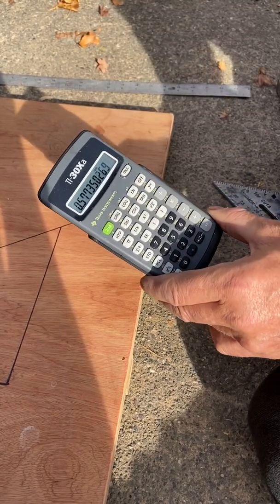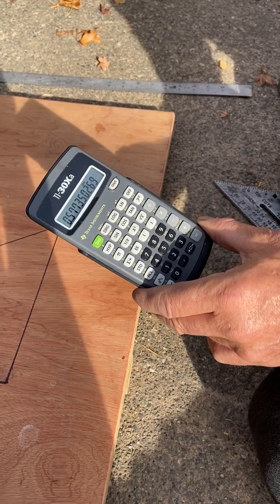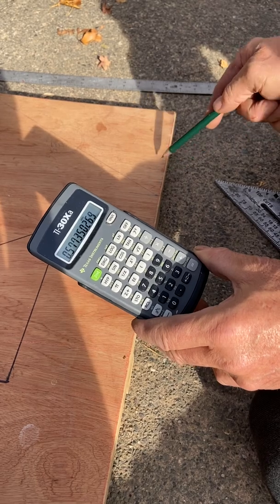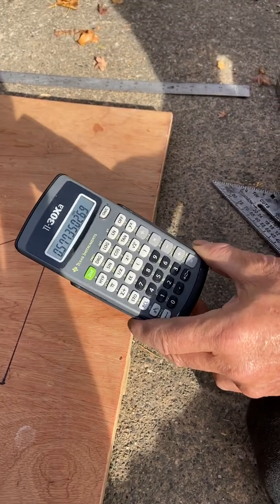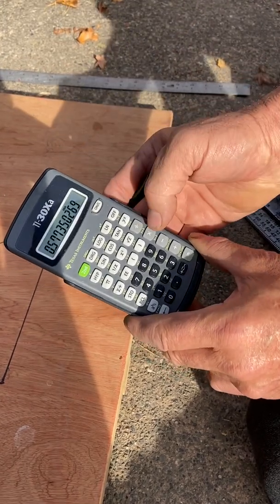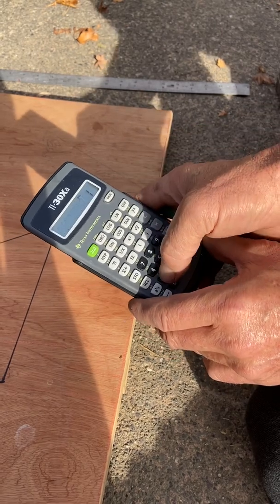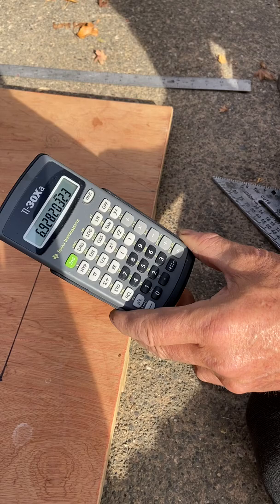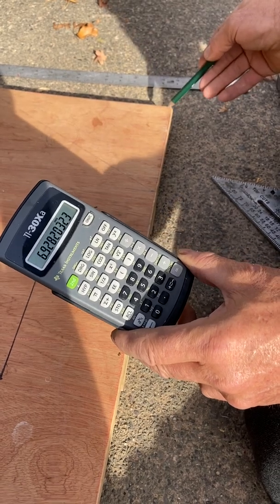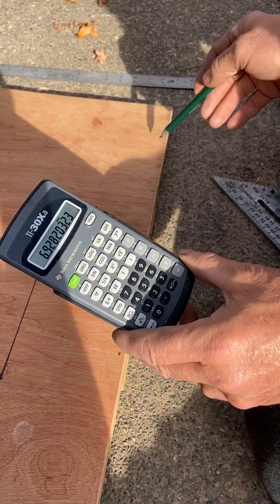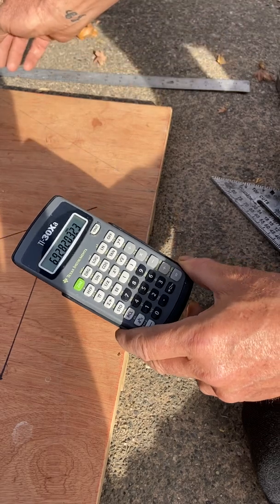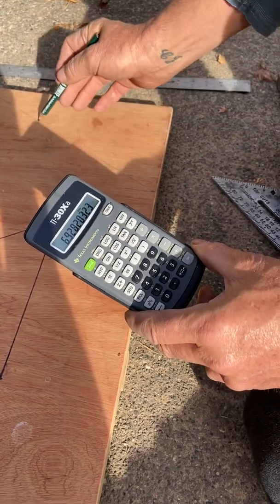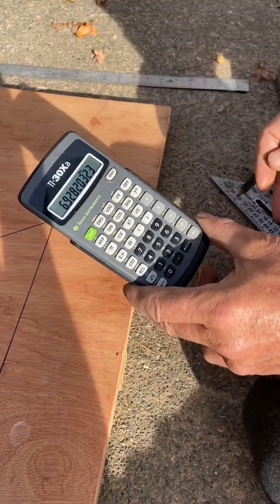And it's 0.573 - essentially 57 percent of 12. So times 12 would give you the exact number: 6.92. From this corner here I pull a 6.92, from the same corner 12, and draw a line between. That's the hypotenuse of the hip in plan view on the level.